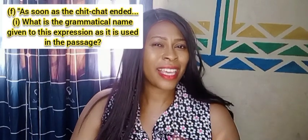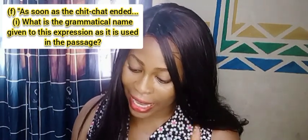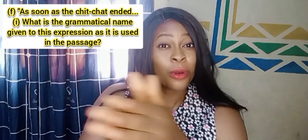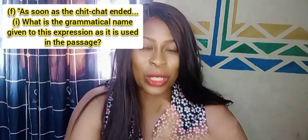For grammatical names and function, all you have to do is know your word class. Look at the underlined expression — does it have a verb in it? If it has a verb, it becomes a clause. If it does not have a verb, then it becomes a phrase. Watch out for the pointers. The question usually asks: 'What is the grammatical name given to this expression as it is used in the passage?' So go back to the passage, look at the full sentence, see how the underlined expression behaves, and look at its attitude before you conclude on the grammatical name.